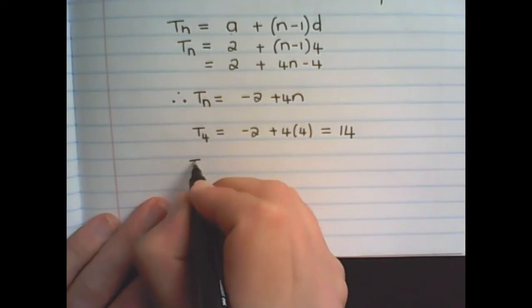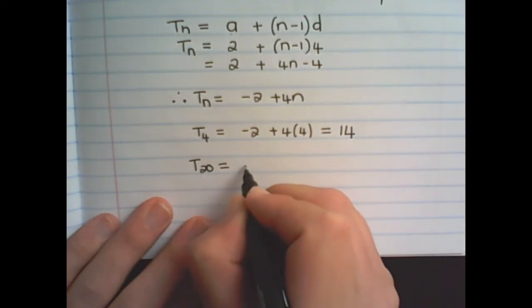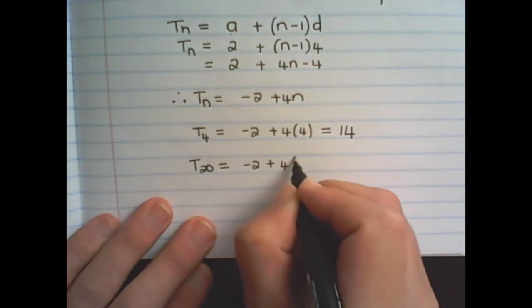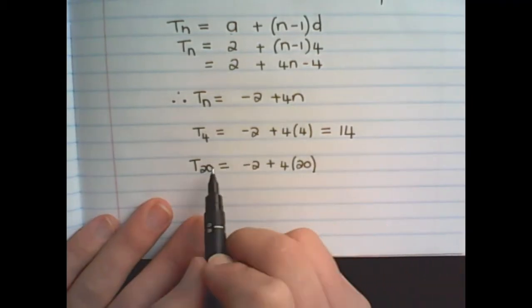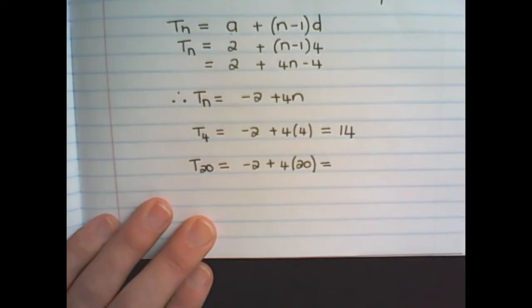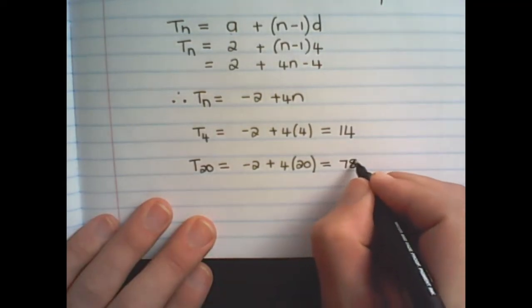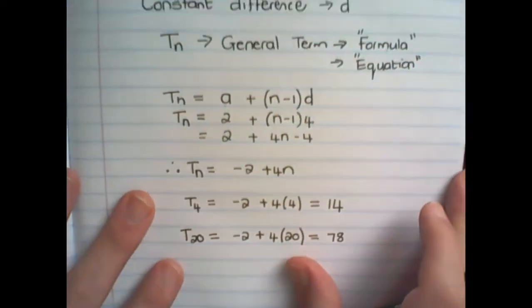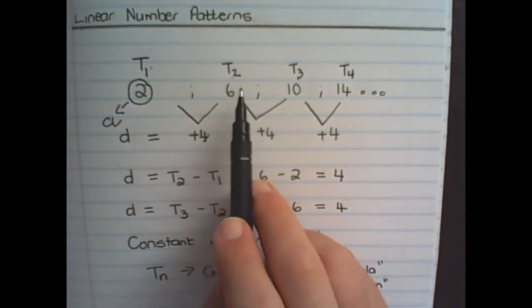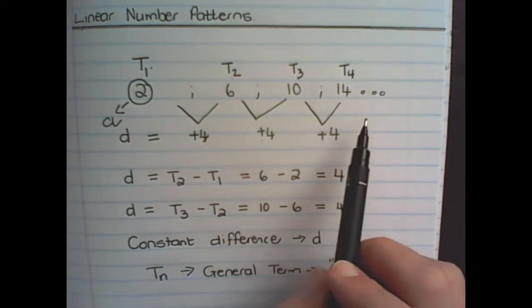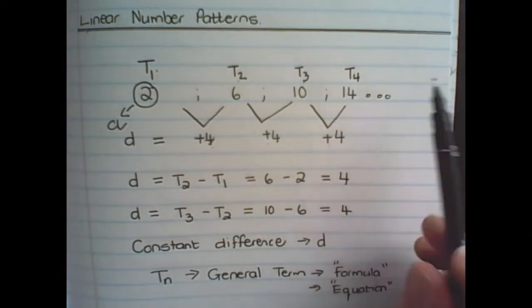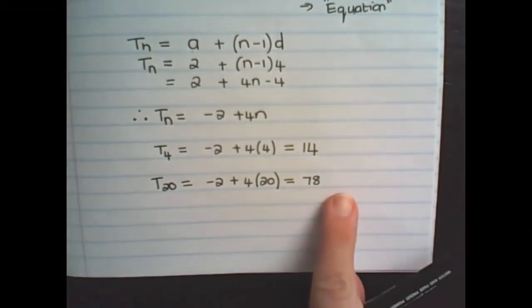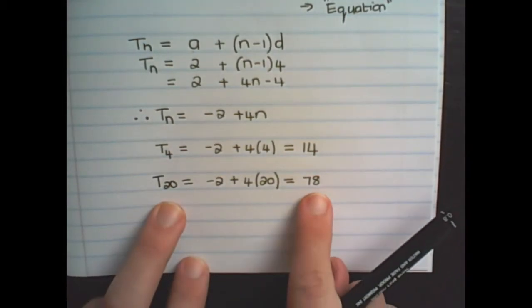This also allows me to find other values of terms in the sequence. Let us say, for example, I want to find the value of the 20th term. And I can say it's negative 2 plus 4 times 20. So substituting n with 20. And that will give me 78. So instead of writing out the pattern, or continuing the pattern with 14, 18, 22, up until I get to the 20th term, I can simply use the formula to get to the value of the 20th term quicker.